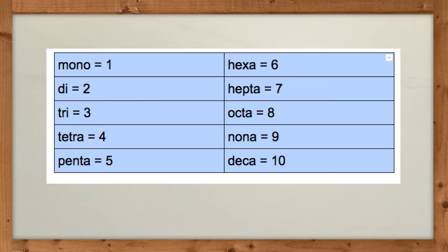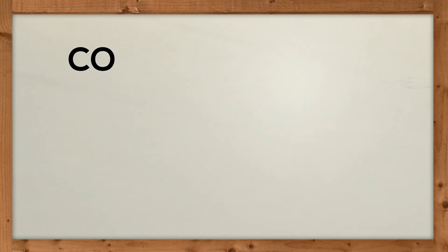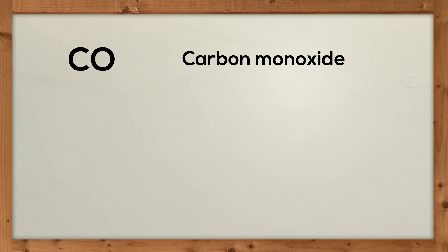Let's get started with a couple of formulas and I'll go through some of the rules. Up first is CO. Rule number one: with the first element, if it does not have more than one — in other words, if it's just one — you just say the element name. You don't say monocarbon. Then for the second element, you do add the prefix. So this will be carbon monoxide.